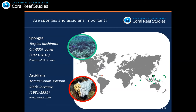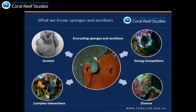I have two examples of sponges and ascidians overgrowing corals. The first is the sponge Terpius Oshinota, also known as the plaque disease, which is able to overgrow coral and was first recorded in Guam. It has since been reported in multiple spots across the Indo-Pacific, covering up to 30% of the substratum. The second example is the ascidian Tridium solidum, first reported in Curaçao in the Caribbean. After 15 years of monitoring, researchers reported a 9,900% increase in its abundance.